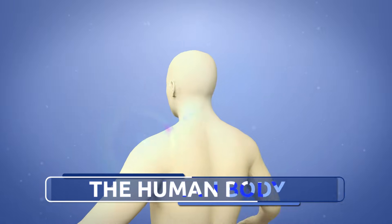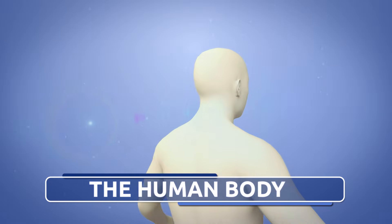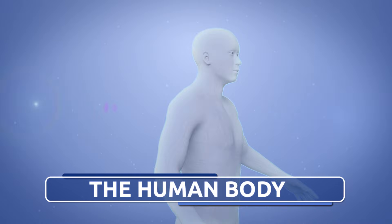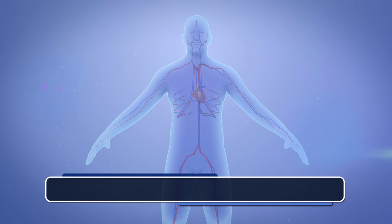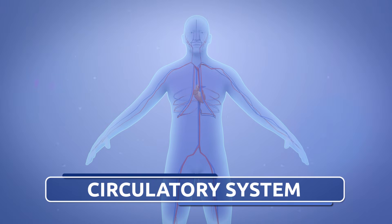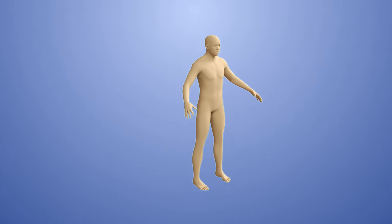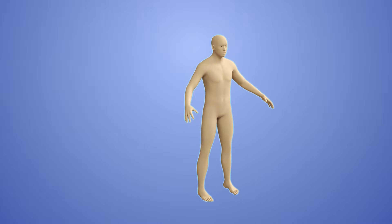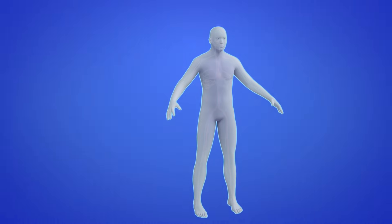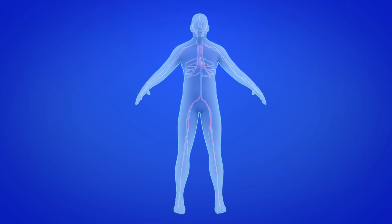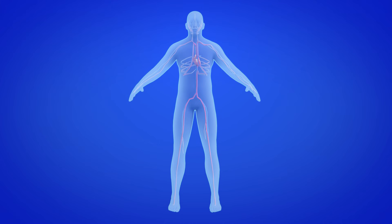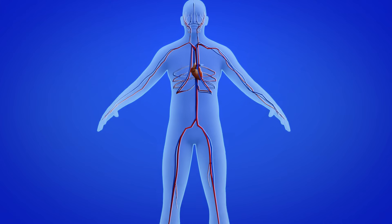The circulatory system transports nutrients and oxygen through the whole body, thanks to blood through our veins.